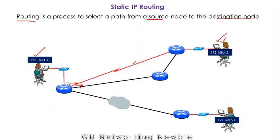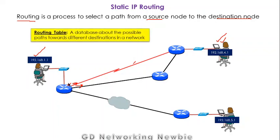The router depends on information stored in a table to make that decision, and that table is known as the routing table. A routing table is basically a database about the possible paths towards different destinations in a network.